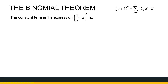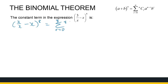Another type of question I can ask is: what is the constant term? By asking this question, I'm saying there will be a term without any x's. So where will that term lie? We're going to look for an r value for which there are no x's, meaning the exponent of x is 0. So if I've got (3/x − x)^8, that is r going from 0 to 8, 8Cr, (3/x) to the power (8 − r), and (−x) to the power r.